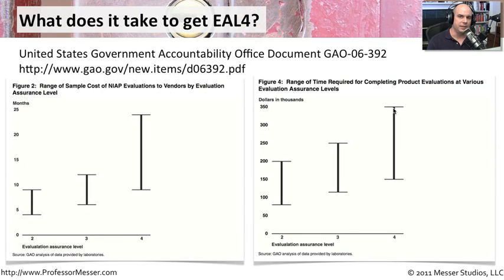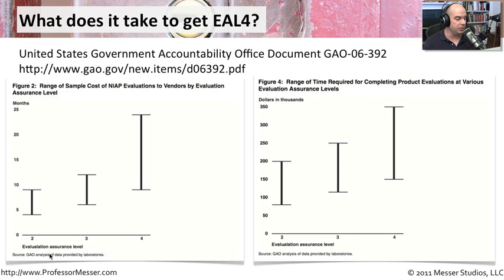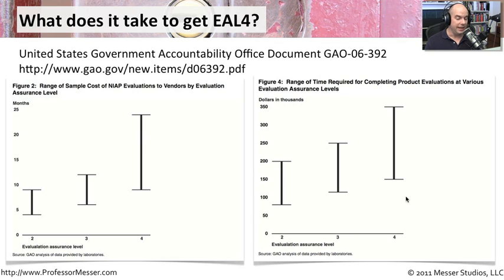To get an idea of what manufacturers are going through to get their devices to EAL4 level, I grabbed these stats from the United States Government Accountability Office — document GAO-06-392, with a URL available if you want to download the PDF. It shows how long it takes to become EAL compliant, not only from a time perspective but a cost perspective. EAL2 may take anywhere from five to just under 10 months and costs roughly $75,000 to $200,000. EAL4 can take 10 months up to 24 or 25 months — years — and costs $150,000 up to $350,000 to complete that certification.